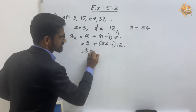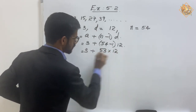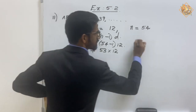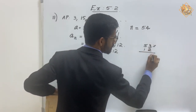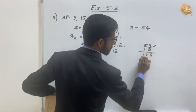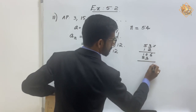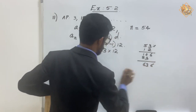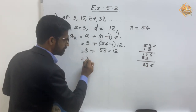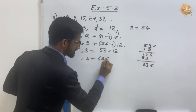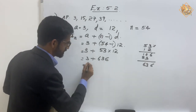That gives us 3 plus 54 minus 1 into 12, which is 3 plus 53 into 12. Now 53 into 12 equals 636. So 3 plus 636 equals 639.